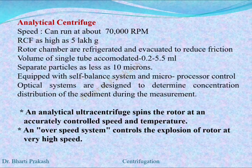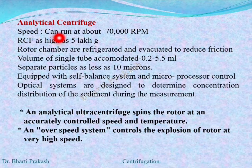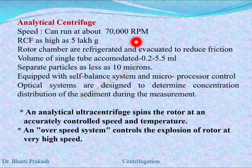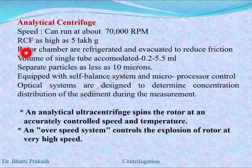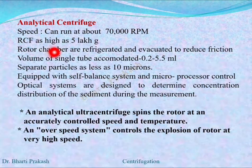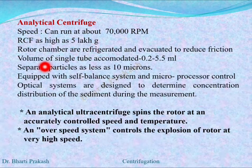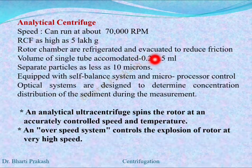Now let us study the features of the analytical centrifuge. First, the speed — it can run at about 70,000 rpm. The relative centrifugal force, or RCF, is as high as five lakh times gravity. The rotor chambers are refrigerated and evacuated to reduce friction.